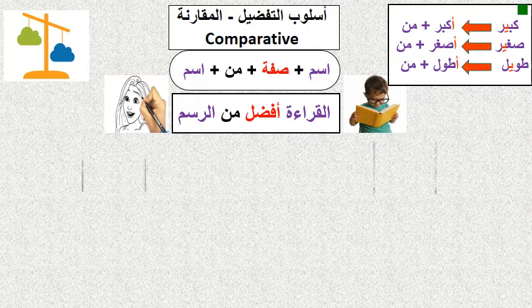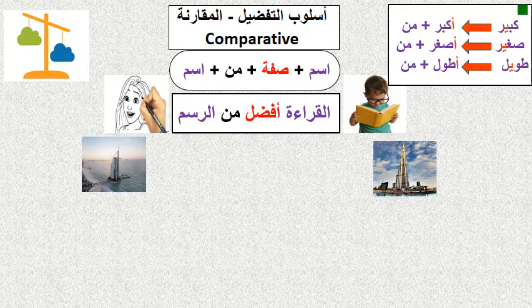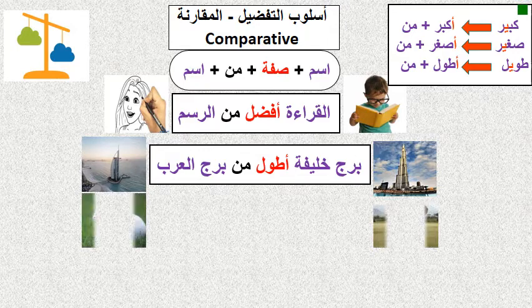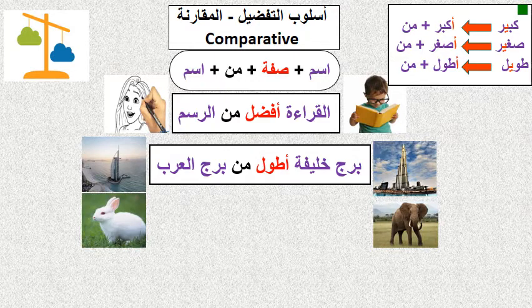Now we compare between برج خليفة and برج العرب. Burj Khalifa, you know, is taller than Burj Al Arab. So how to say that in Arabic? برج خليفة أطول من برج العرب — note the adjective أطول من. Burj Khalifa is taller than Burj Al Arab.